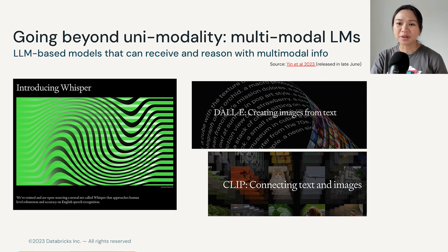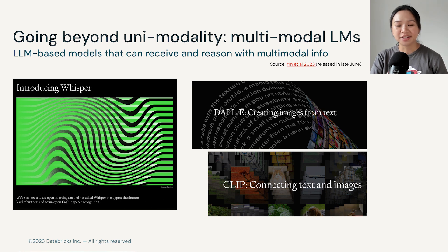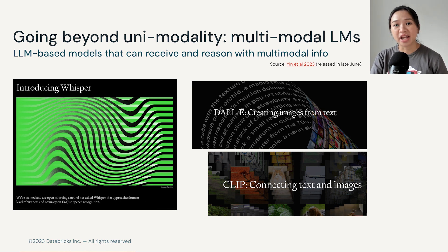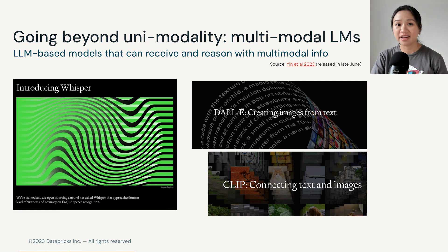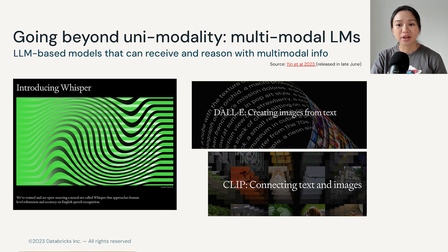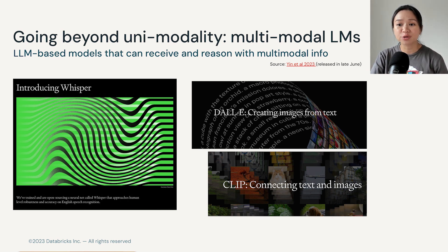Some of the most commonly cited examples of multi-modal language models come from OpenAI. The first that you might have heard about is Whisper — it can transcribe speech audio into text. The second is DALL-E, which can create images from text. And for CLIP, when it's given text and image descriptions, it can predict the most relevant text description for that image.